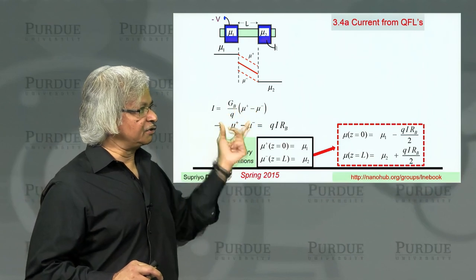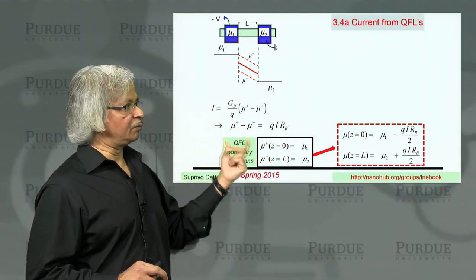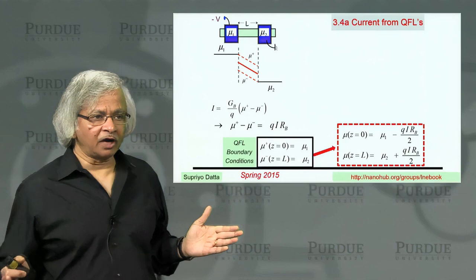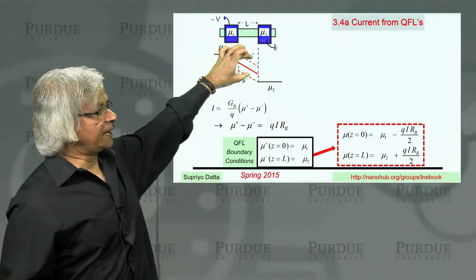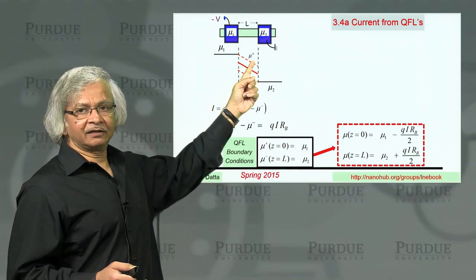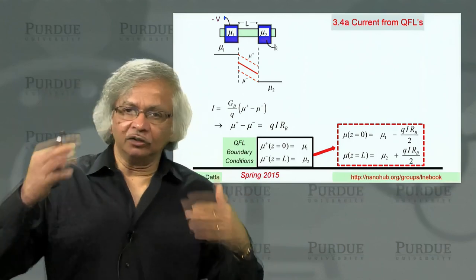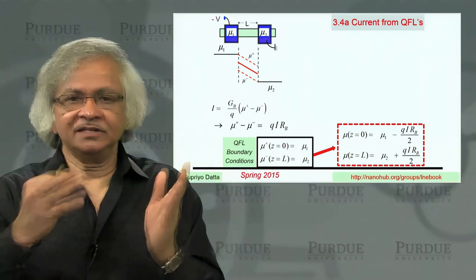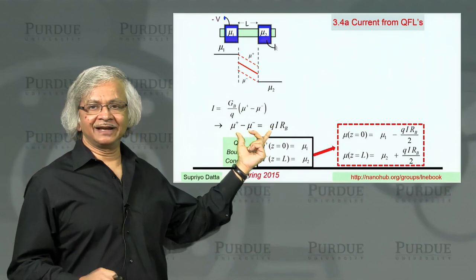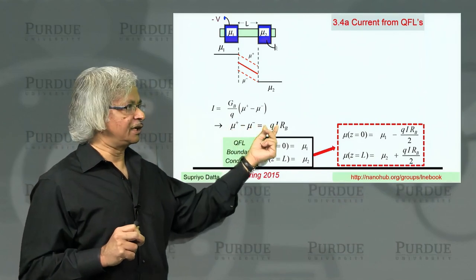And if you take this, you could turn it around and write it in this form. So this just follows algebraically from here. What it says is that the separation of quasi-Fermi levels is proportional to the current. That is, if there is no current, the two quasi-Fermi levels will collapse into one. That makes sense because mu plus tells you how well the right-moving states are filled, and mu minus tells you how well the left-moving states are filled. If there is no current, they are all equally filled. Current flow means right-moving things are more filled than left-moving things.